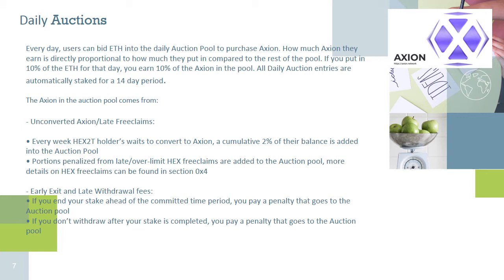80% of the ETH paid in the auction is then used to hyperdrive both the Axion token and the stakers' earnings. First, the ETH is used to purchase the tokens, boosting the token price, and then those tokens are distributed to stakers, creating a very strong positive feedback loop.